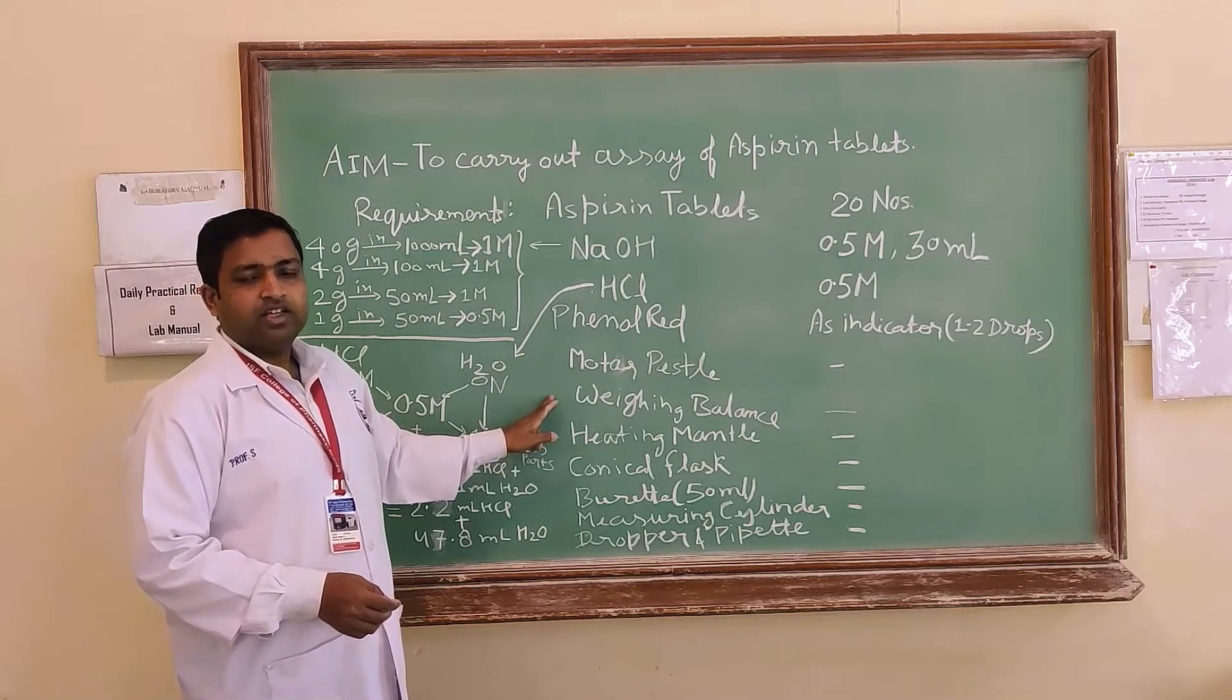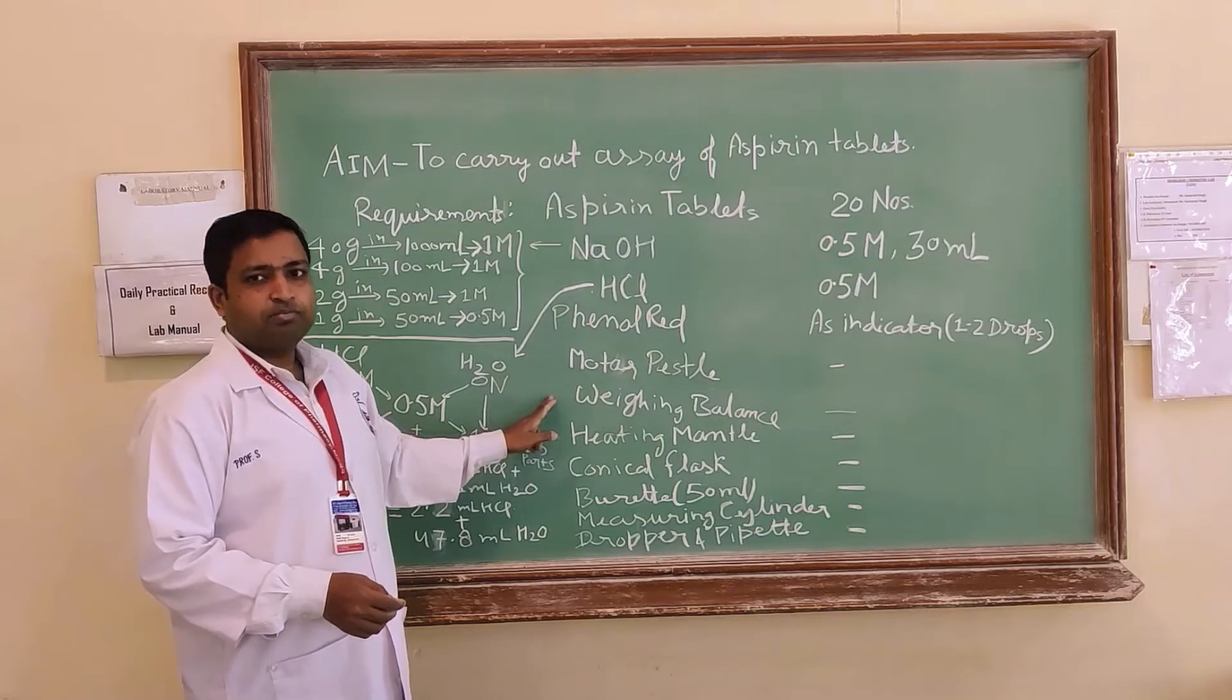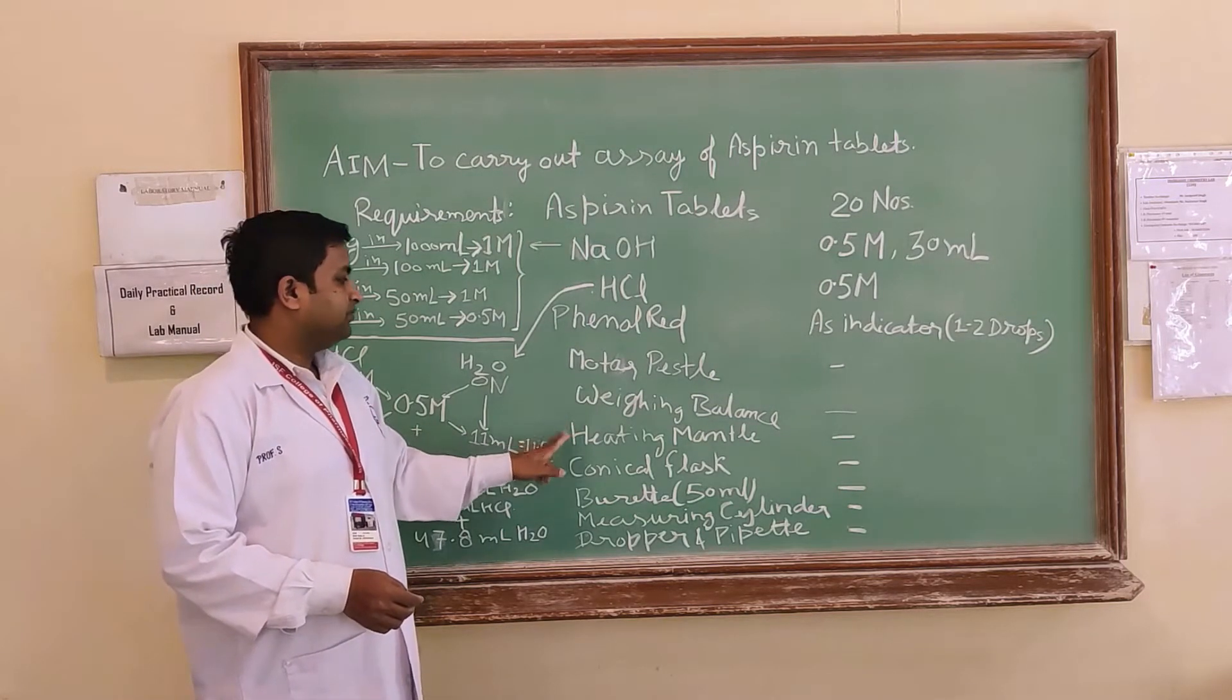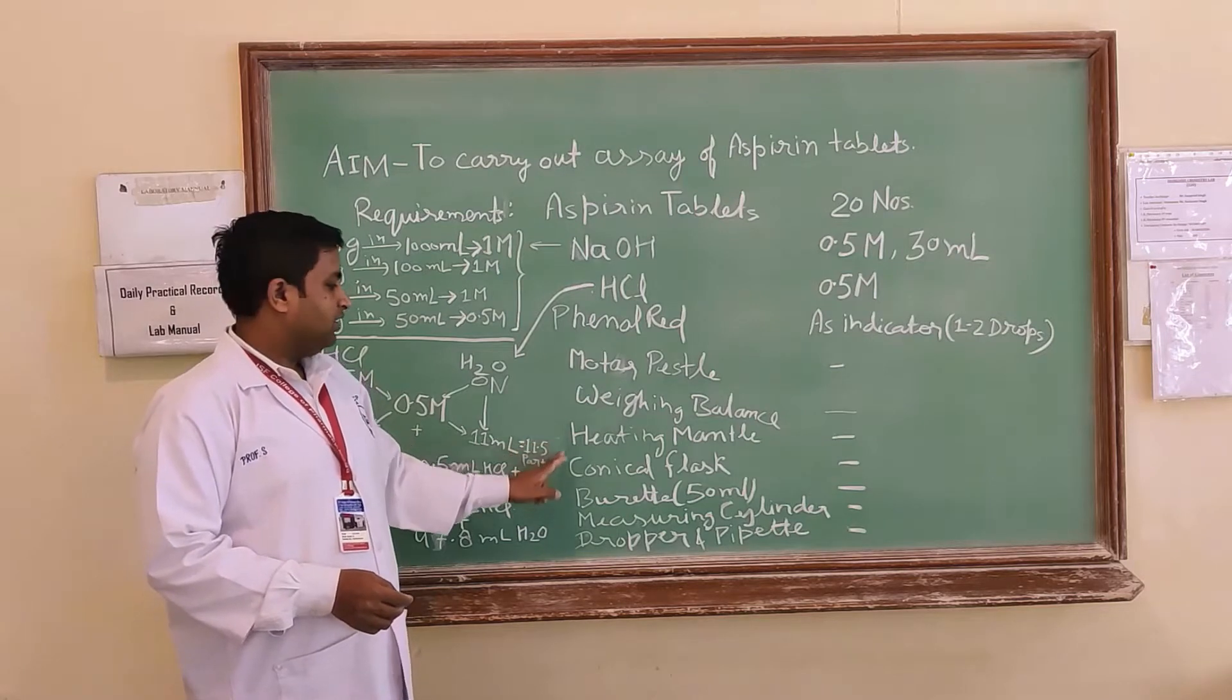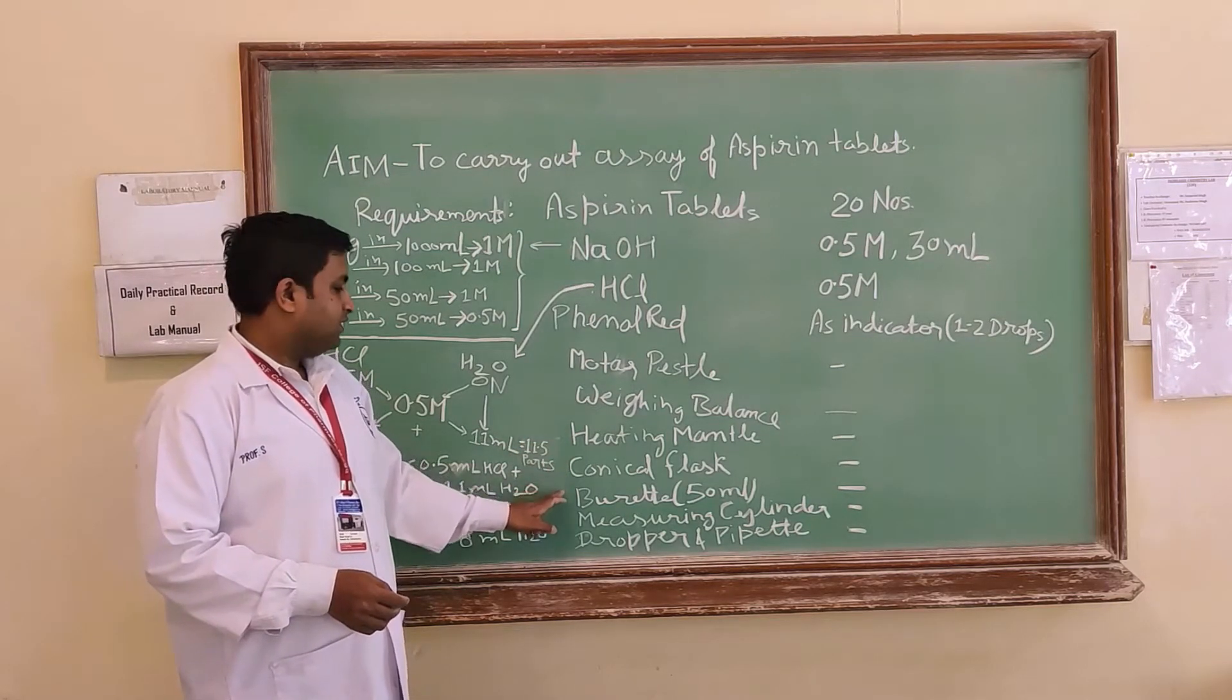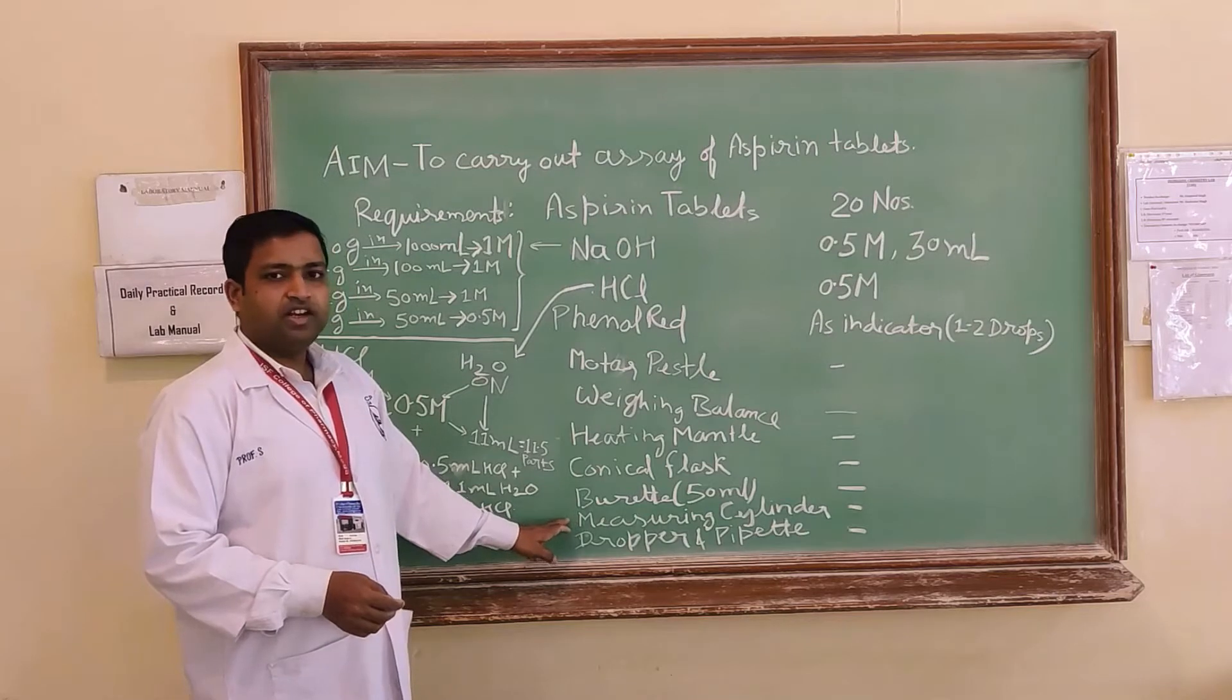To weigh the exact quantity of aspirin and other ingredients: heating mantle, conical flask, burette, measuring cylinder, dropper and pipette.